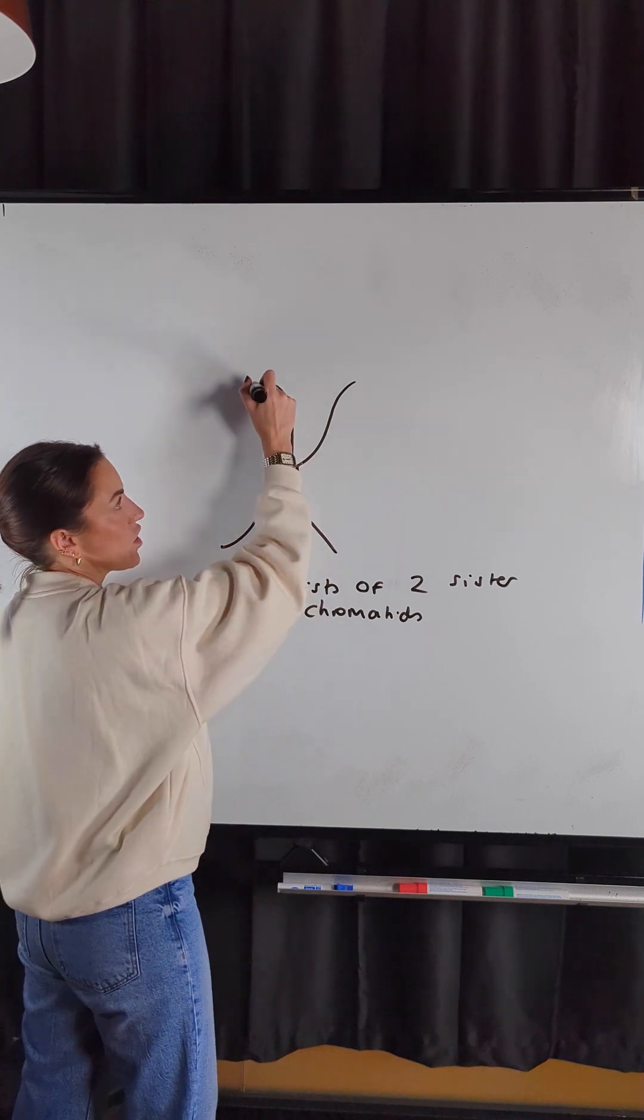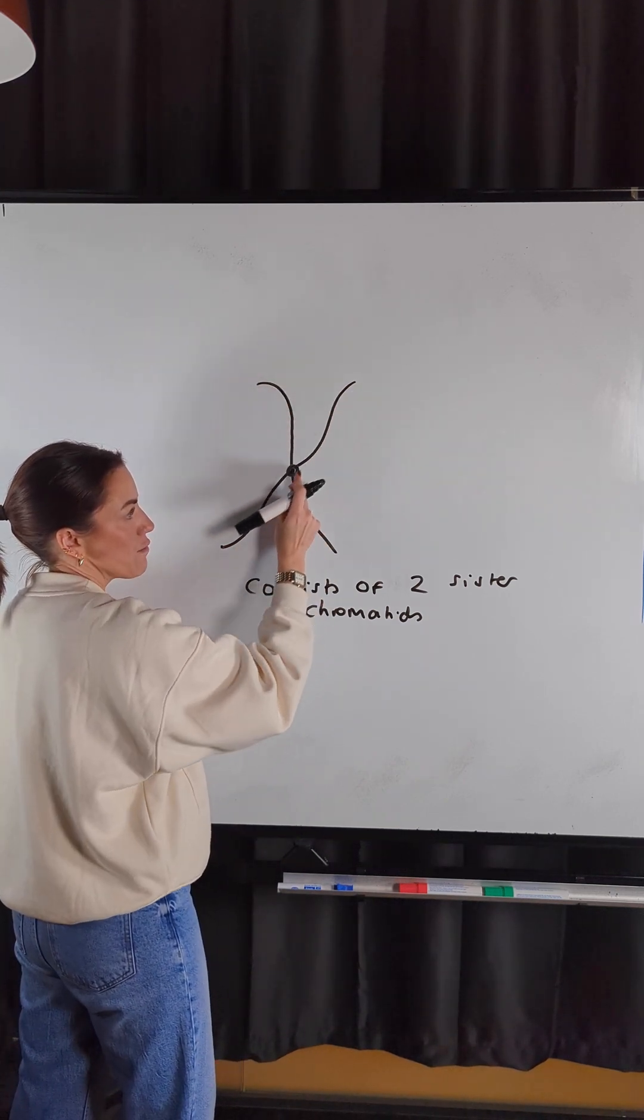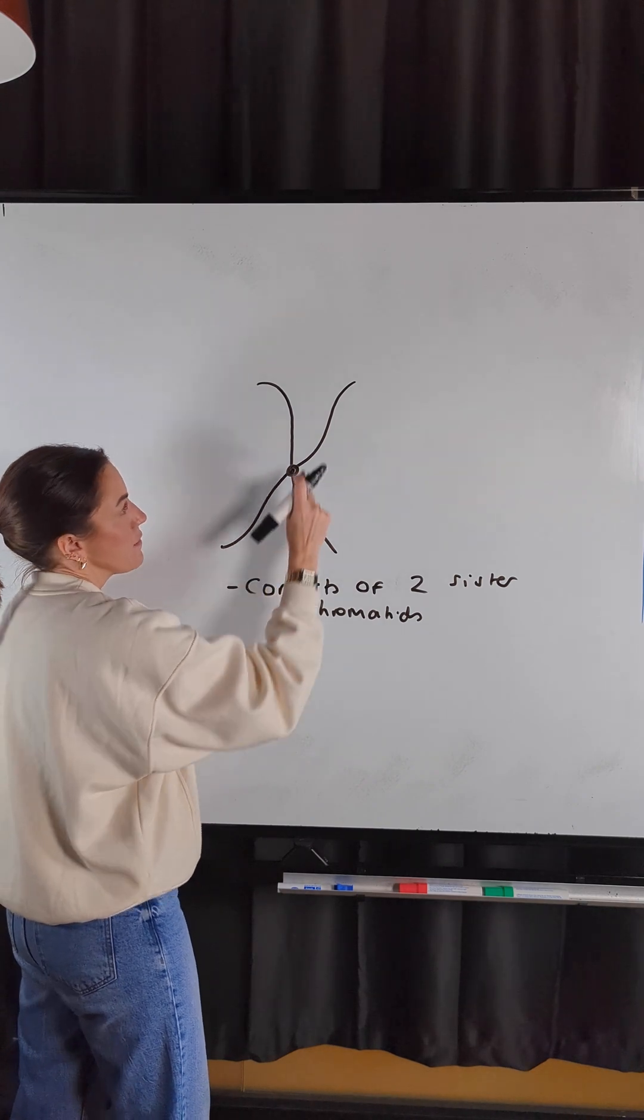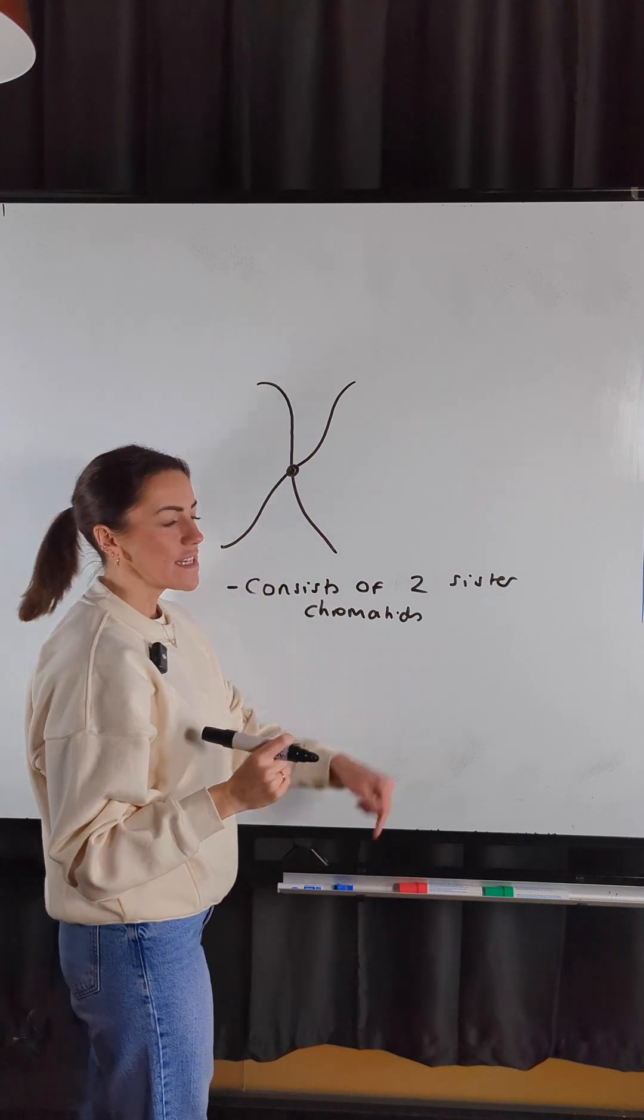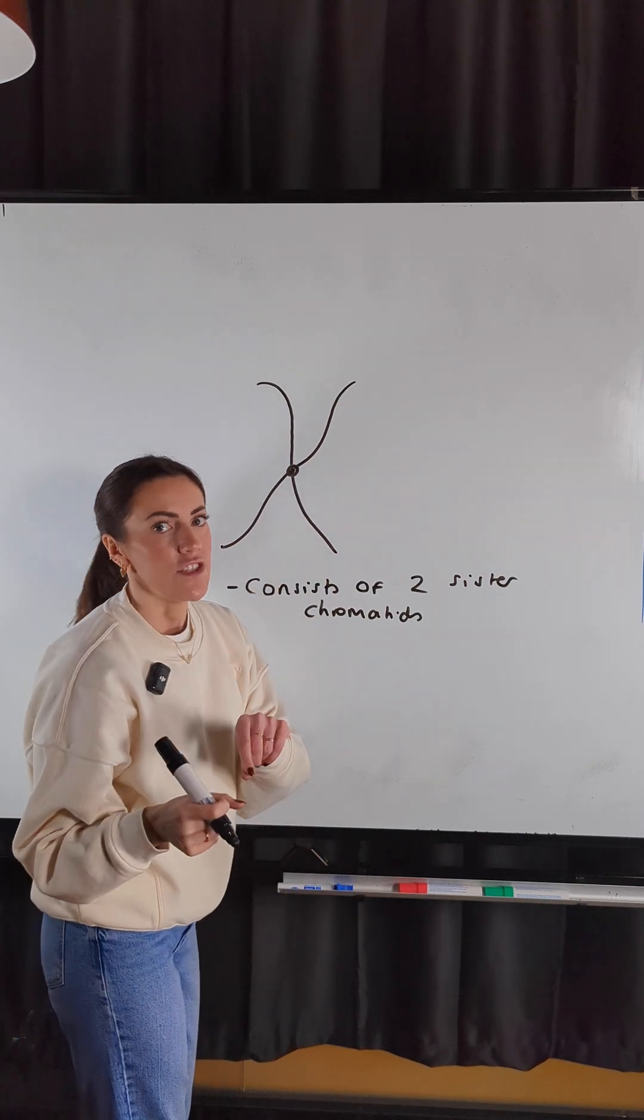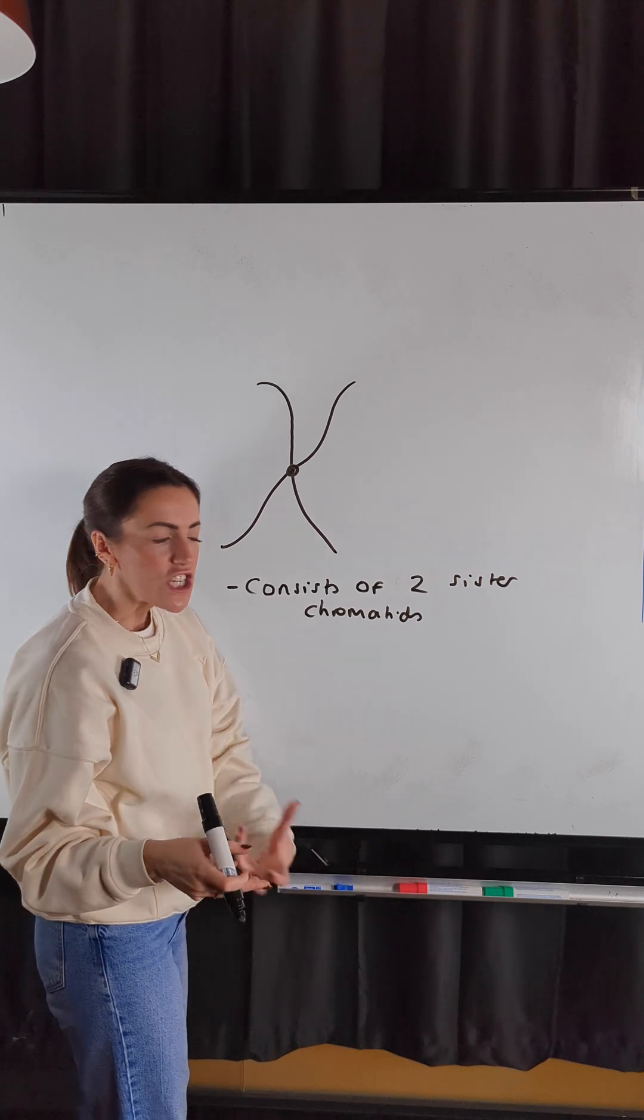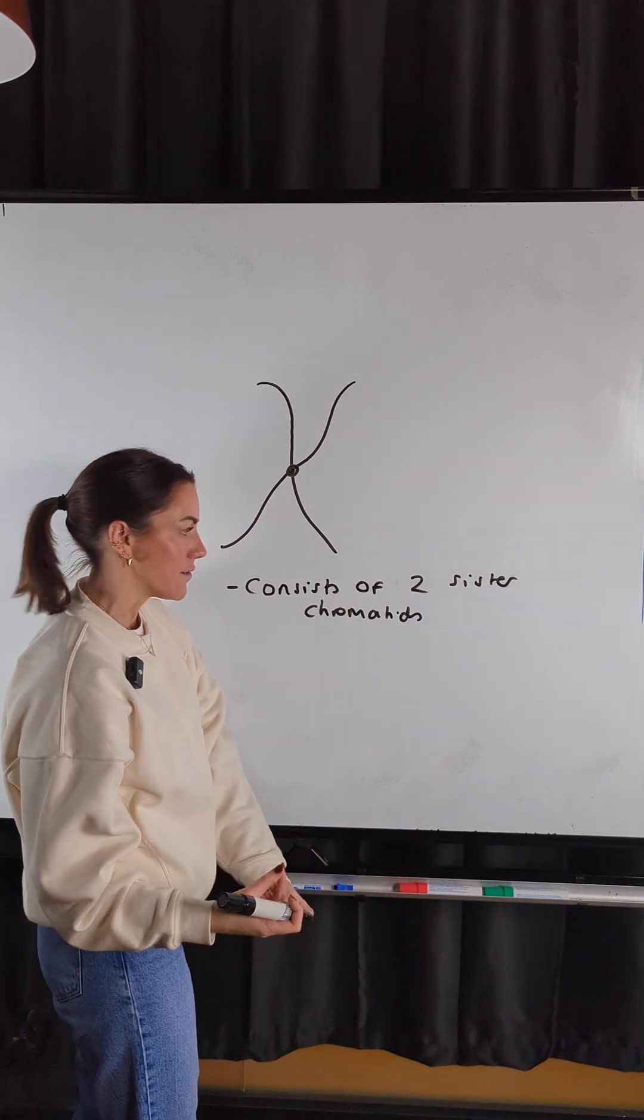So you've got a sister chromatid here and a sister chromatid here because we've replicated the DNA. So each of these sister chromatids will be genetically identical with the same genes, same loci, same alleles.